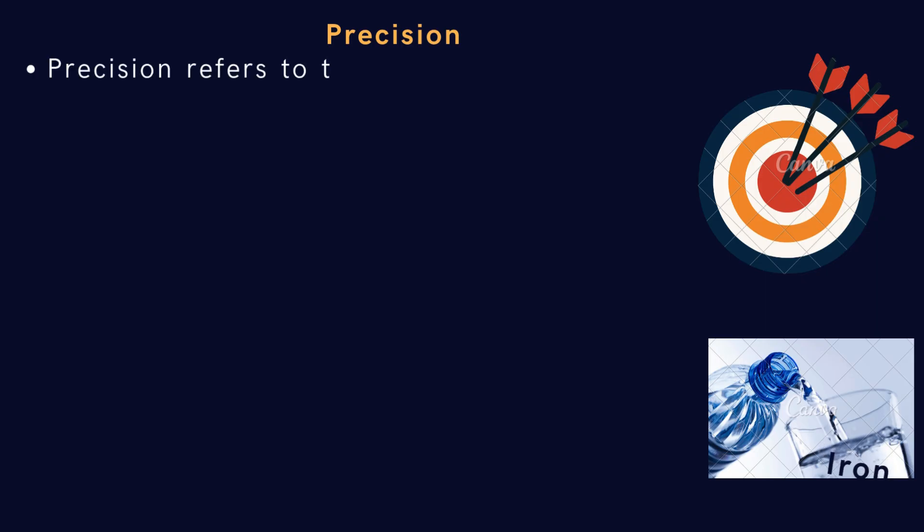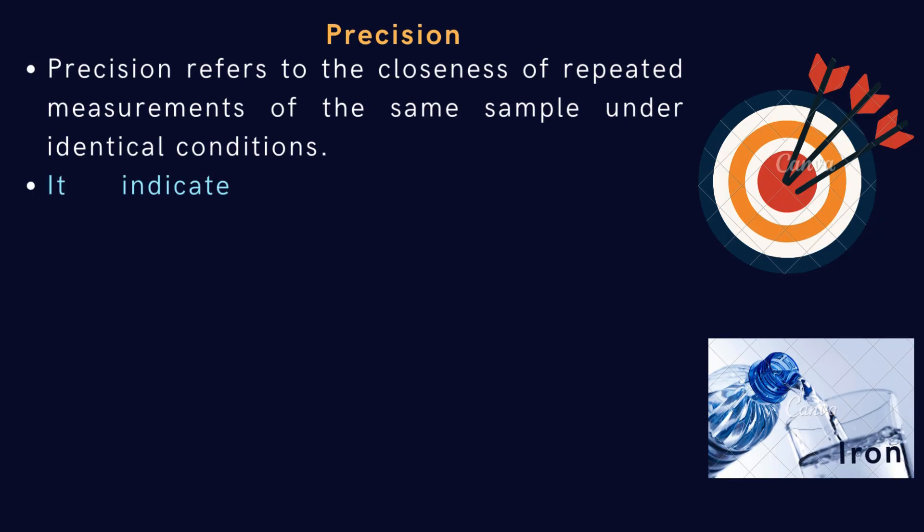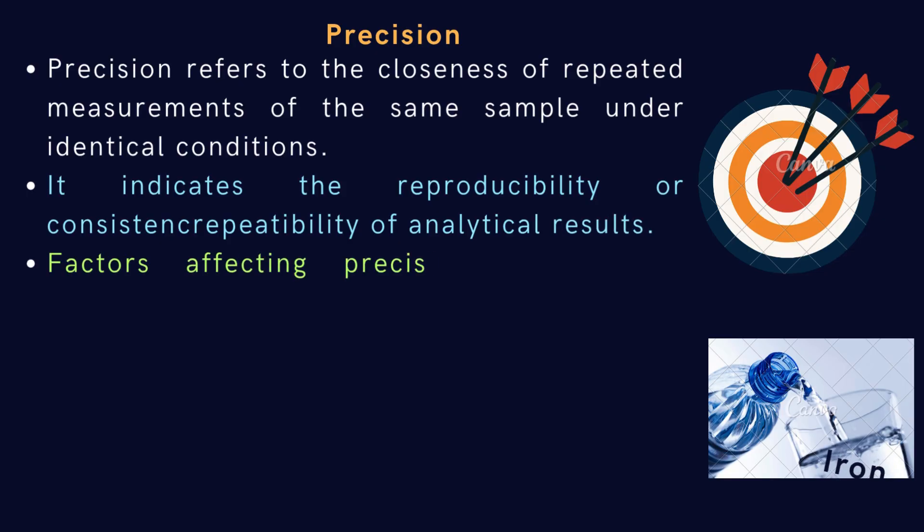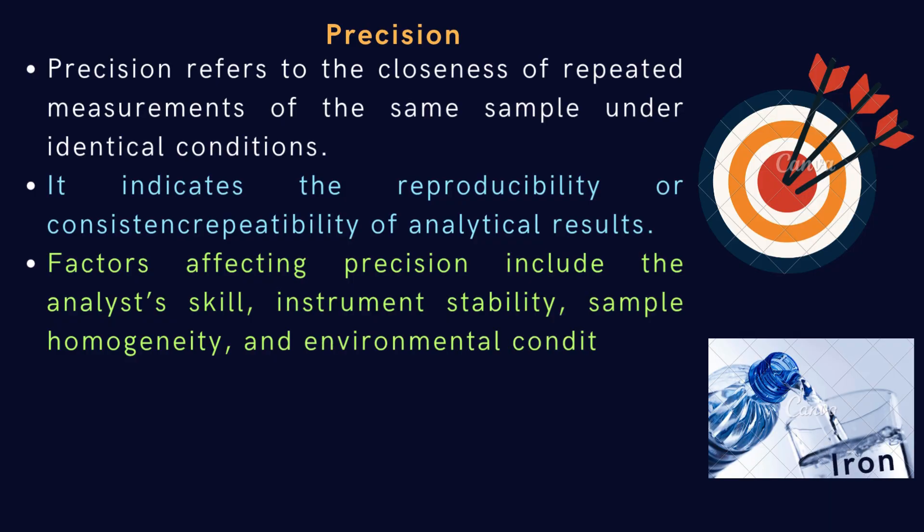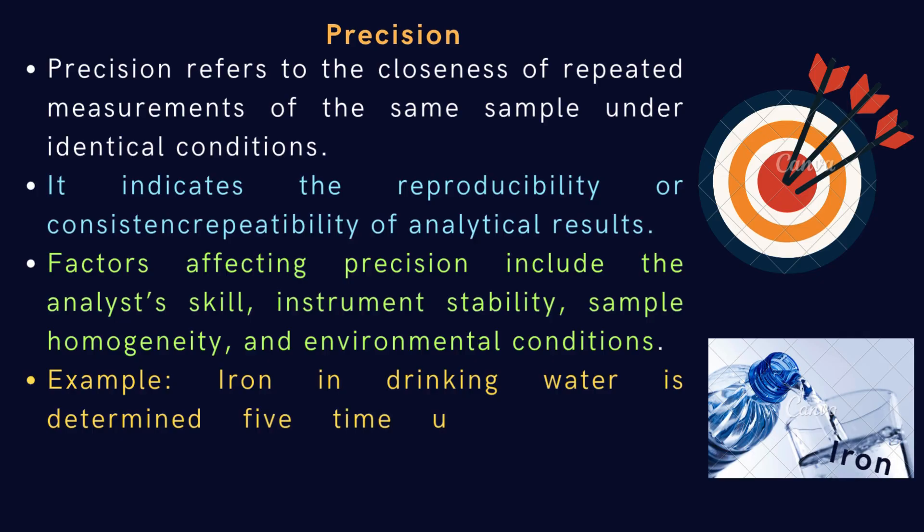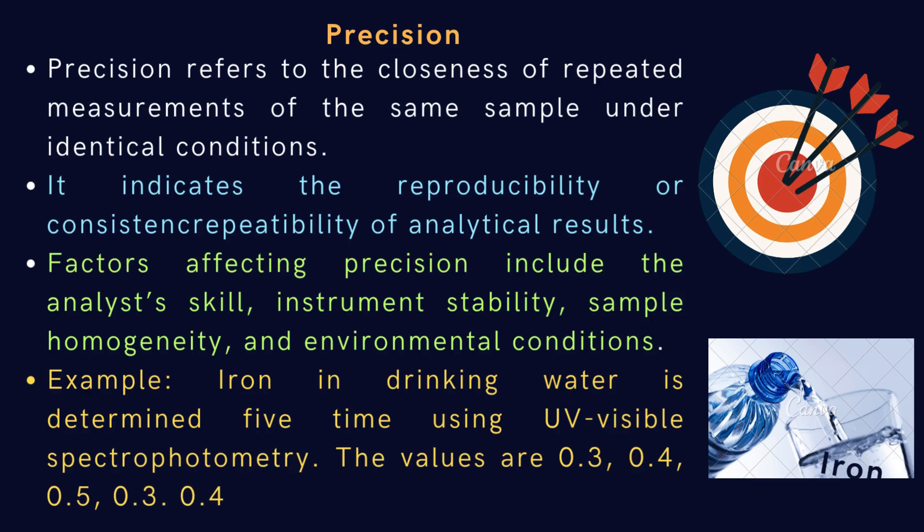Next, precision is another important parameter in analytical measurements. Precision refers to the closeness of repeated measurements of the same sample under identical conditions. It shows the reproducibility or consistency of analytical results. Several factors affect precision, including the analyst skill, instrument stability, sample homogeneity, and environmental conditions such as temperature and humidity. Let's understand with an example. Iron in drinking water is determined 5 times using UV-visible spectrophotometry. The measured values are 0.3, 0.4, 0.5, 0.3, 0.4, and 0.5 mg, respectively. These closely grouped results show that the method is precise, even if the actual value might differ slightly from the true one. Precision focuses on repeatability, not necessarily on correctness.